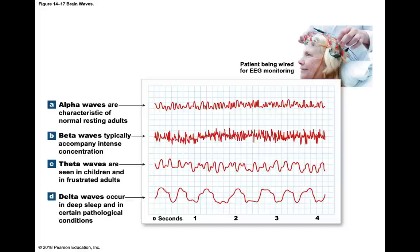Delta waves are normal sleep waves of all ages. They are also seen in awake infants, and in awake adults with brain tumors, vascular blockage, or brain inflammation. The EEG shows synchronized patterns, and a tumor or injury would disrupt those patterns — which is what we're sometimes looking for in EEGs.